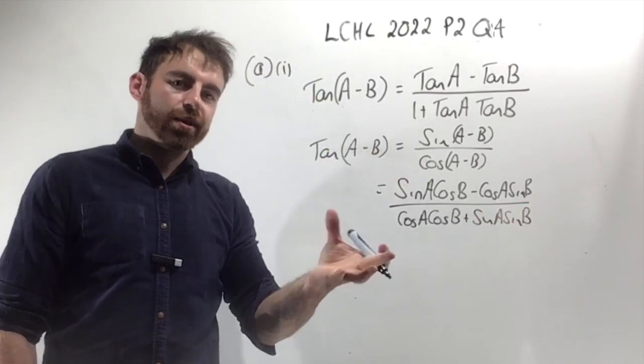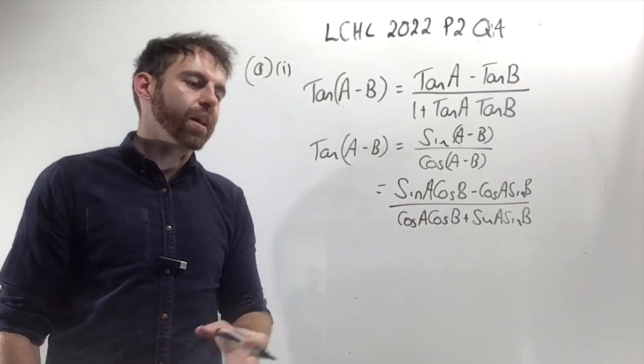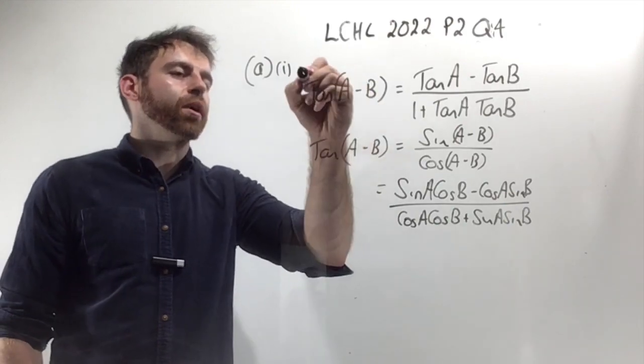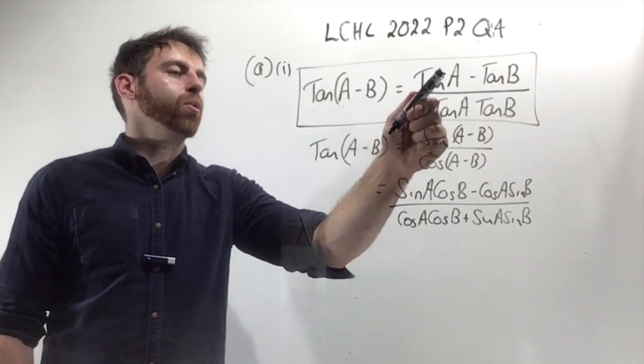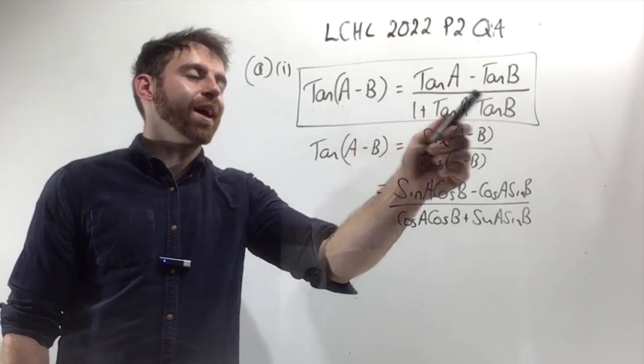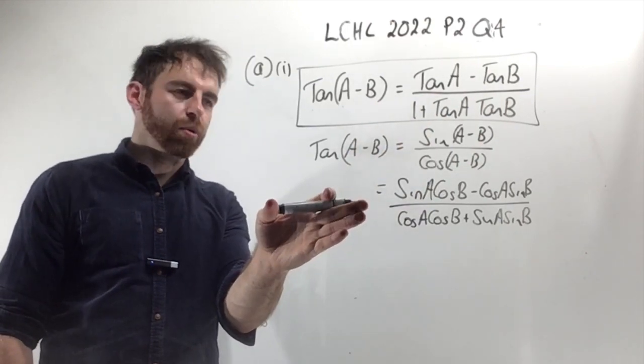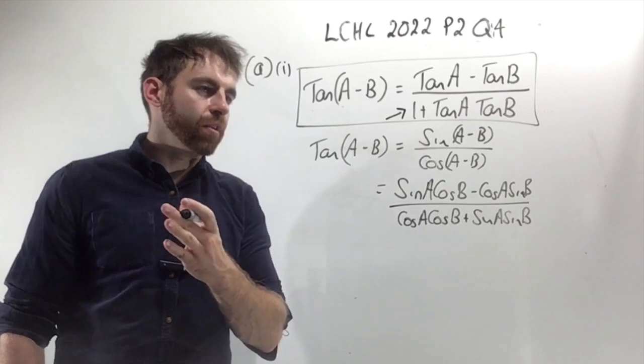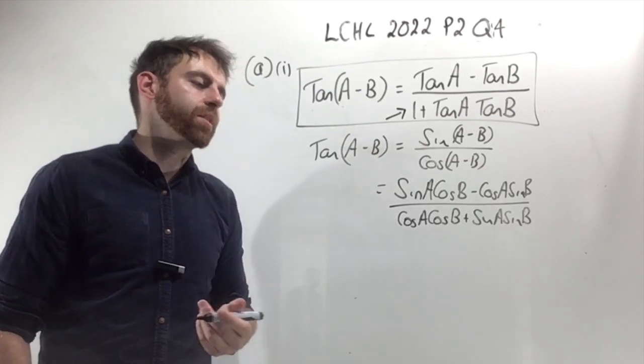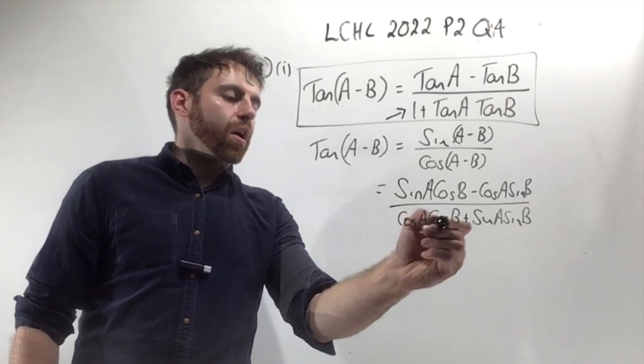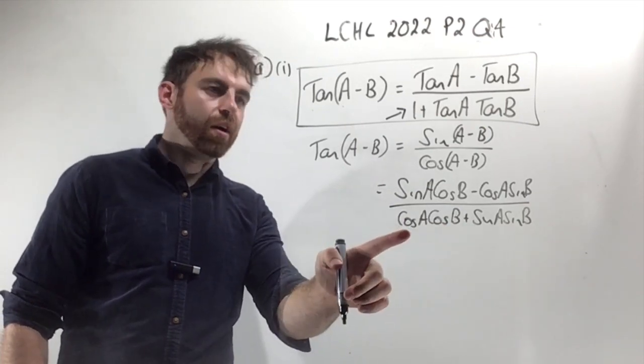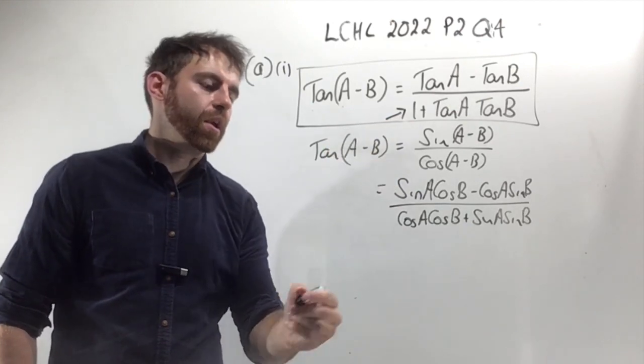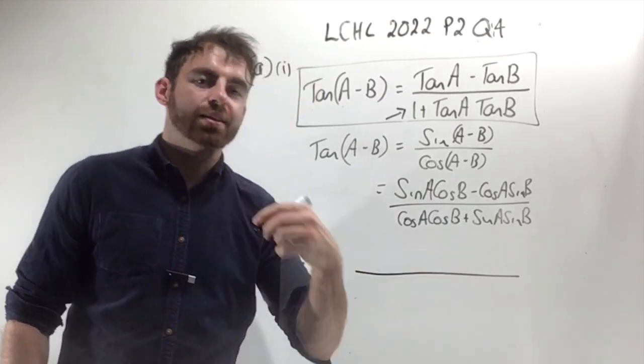The next step is quite difficult. Think about where you're trying to get to—I'm trying to end up with tan A minus tan B over 1 plus tan A tan B. What I'd like you to focus on is there's going to be a 1. The first term on the bottom will be 1. So how do I turn cos A cos B into 1? In order to turn anything into 1, you have to divide it by itself.